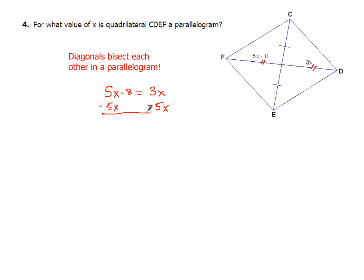We subtract 5x on both sides. On the right-hand side, most people, no problem — they'll get negative 2x. Be careful on the left-hand side: it's not just 8 that comes down, but negative 8. So that's a common error — people will mess that up.